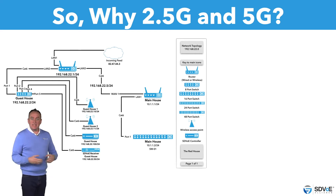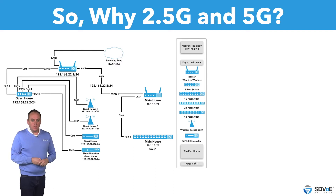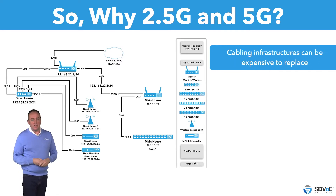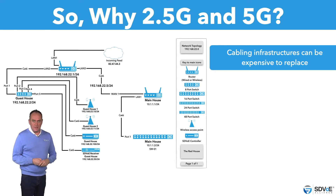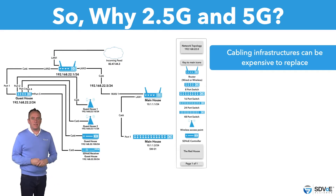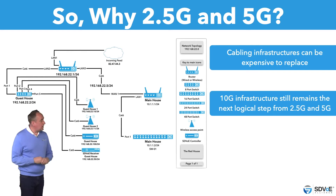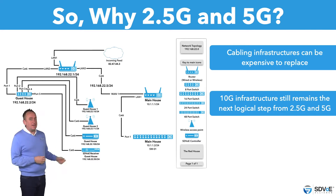Speaking of cables, let's dig into that a little more. Manufacturers of 2.5 and 5 gig components are also appealing to current cabling infrastructures which are prohibitively expensive to replace. Whilst this is a valid argument, it's hardly as future-proofed as some people make it out to be. There's only so much you can do with old infrastructure before it really does need replacing. Given that 10 gig, which is the logical step up from 2.5 gig and 5 gig, doesn't work well with 10-year-old cables — how long will it really be before that old cable finally gives up?